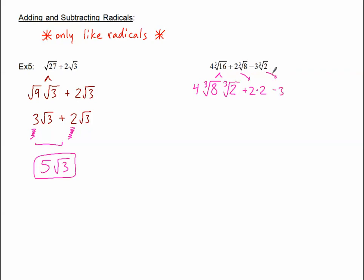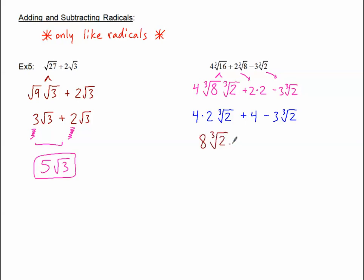And we've got this negative 3 and just a cube root of 2. So let's simplify this part. I've got my 4, the cube root of 8 turns into a 2, and I've got my cube root of 2. And then I've got plus 4, and then I've got minus 3 cube roots of 2. Let's keep going. 4 times 2 becomes an 8, so now I've got 8 and then the cube root of 2, plus 4, and then minus 3 cube roots of 2.